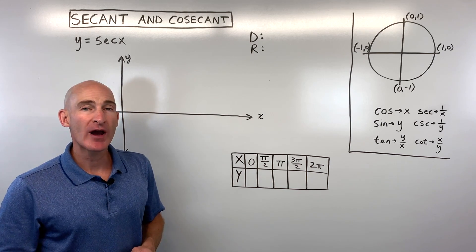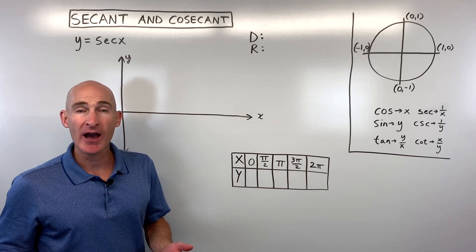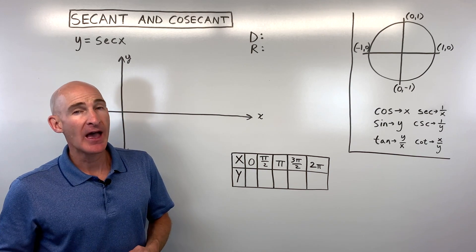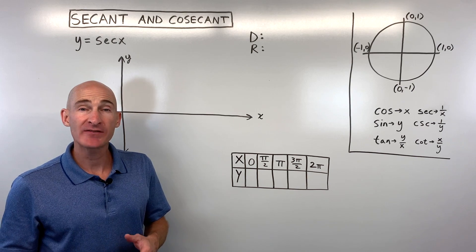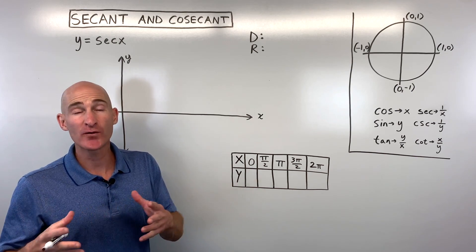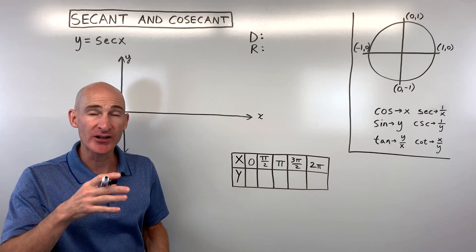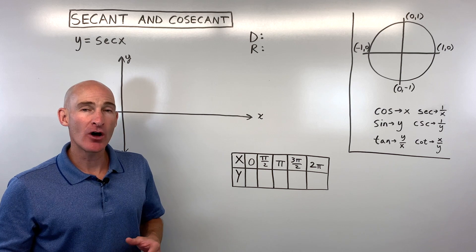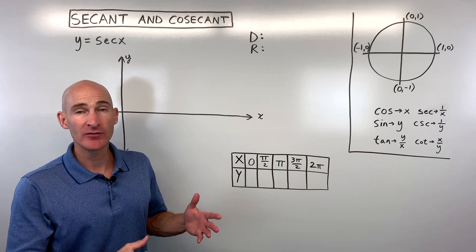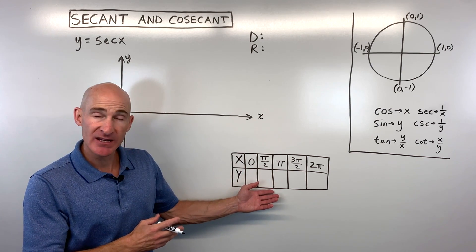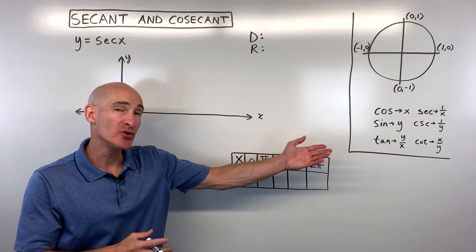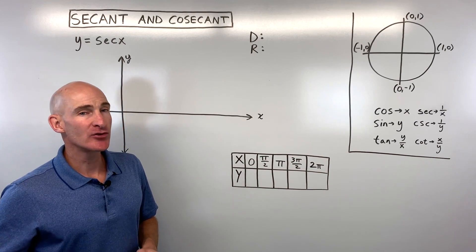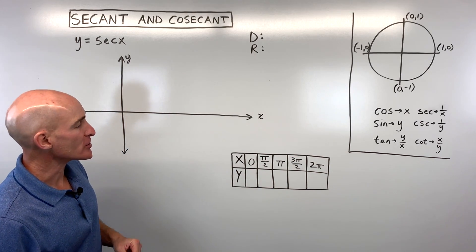In this video, you're going to learn how to graph the secant graph and the cosecant graph, as well as secant and cosecant graphs that have been transformed — like stretched, shrunk, or shifted. We're going to do this all from the perspective of using the table and the unit circle. So let's go through some examples together.